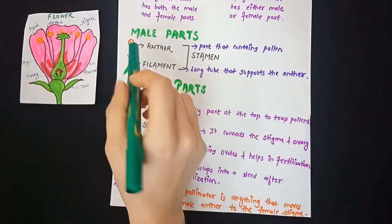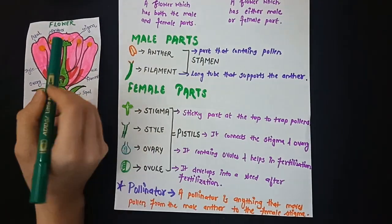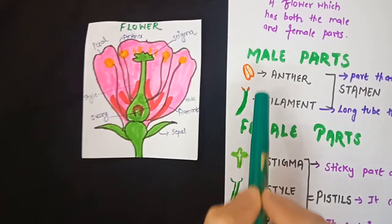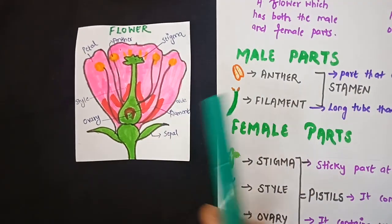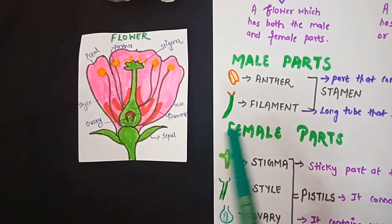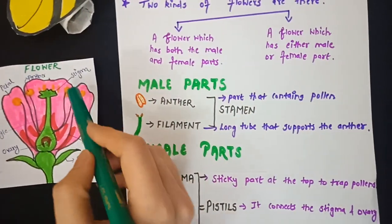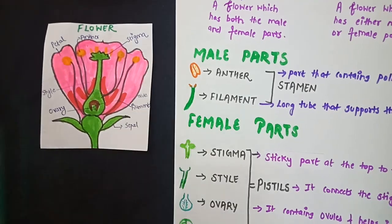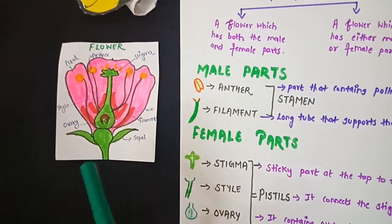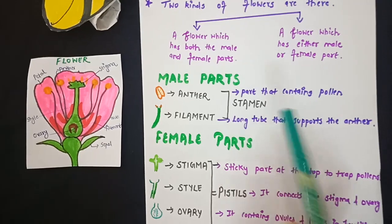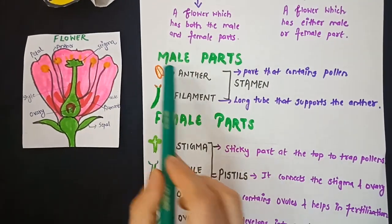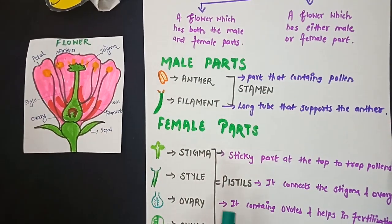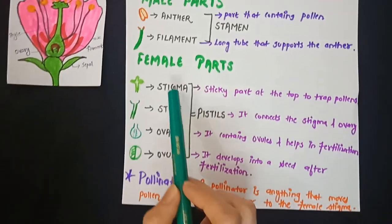The anther is the part that contains pollen. In this picture, this one is your anther, and the tiny rings present inside the anther — those are the pollen grains. The filament is the long tube that supports the anther. Jointly, the anther and filament are called the stamen of a flower, because they are the male parts of a flower.